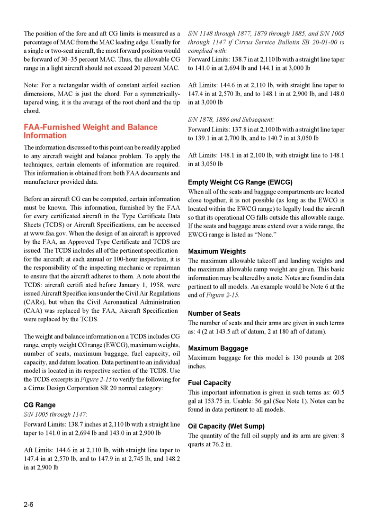At each annual or 100-hour inspection, it is the responsibility of the inspecting mechanic or repairman to ensure the aircraft adheres to the TCDS specifications. Aircraft certificated before January 1, 1958 were issued aircraft specifications under the Civil Air Regulations (CARs), but when the CAA was replaced by the FAA, aircraft specifications were replaced by the TCDS. The weight and balance information on a TCDS includes CG range, empty weight CG range (EWCG), maximum weights, number of seats, maximum baggage, fuel capacity, oil capacity, and datum location.